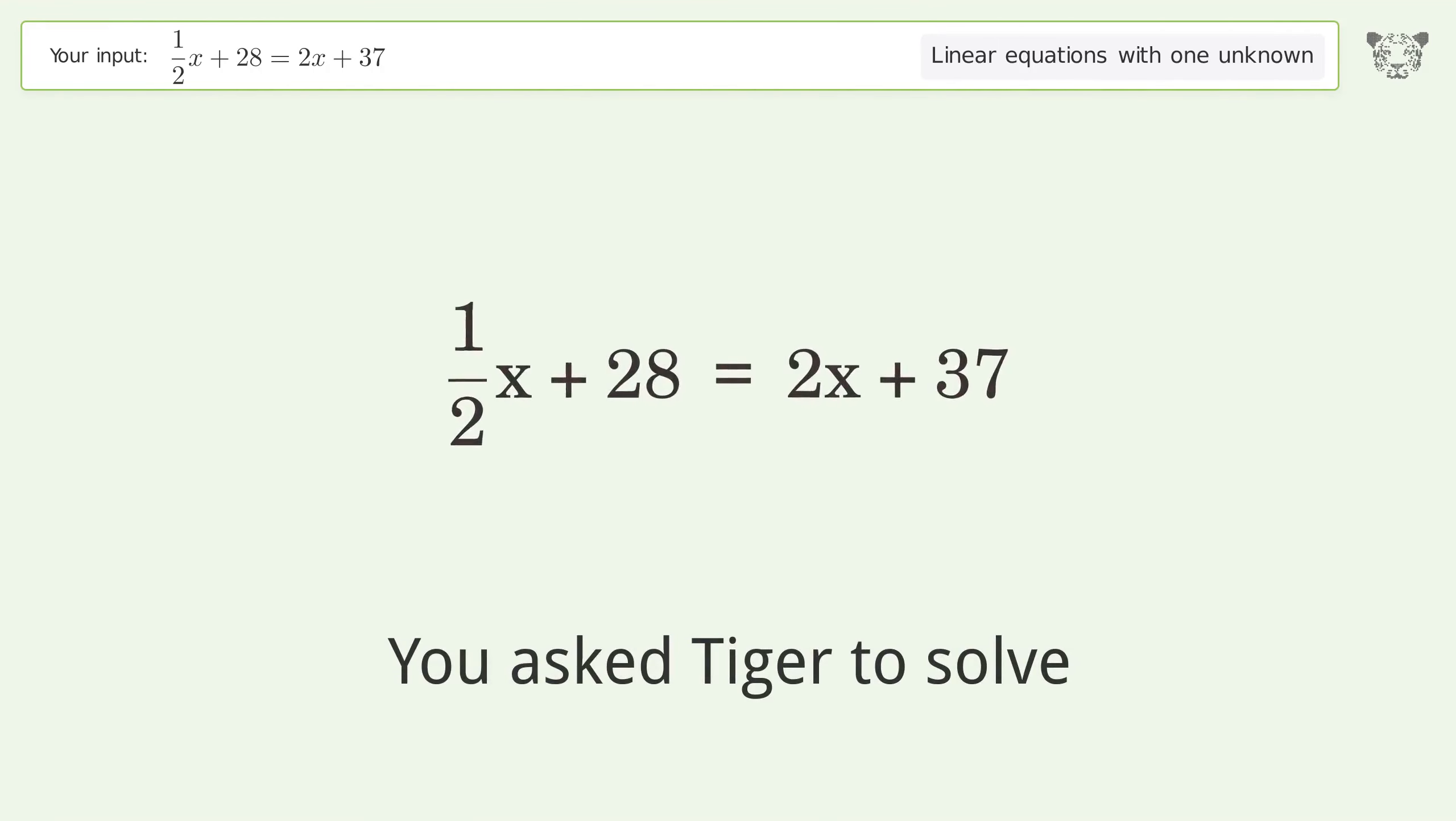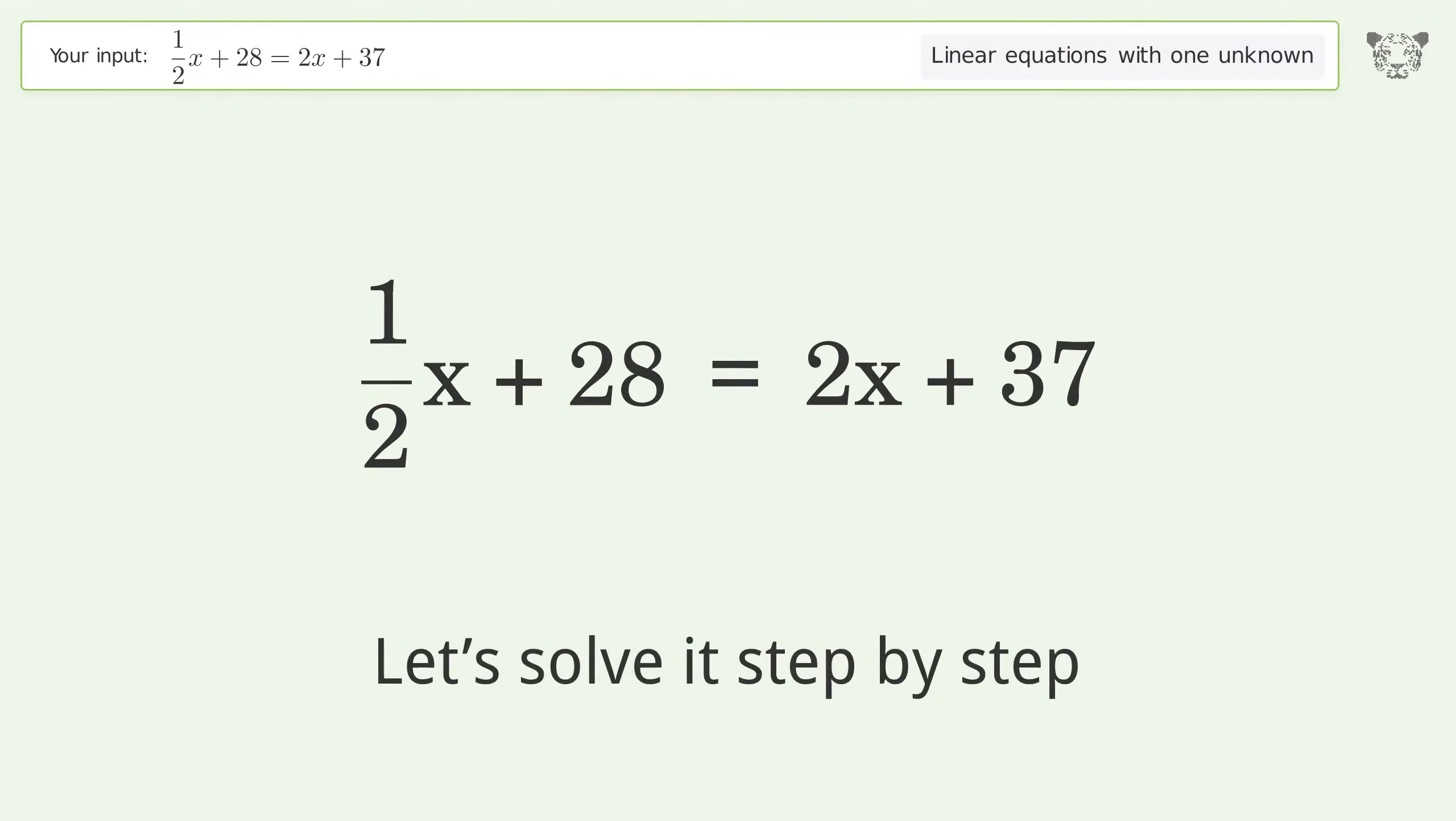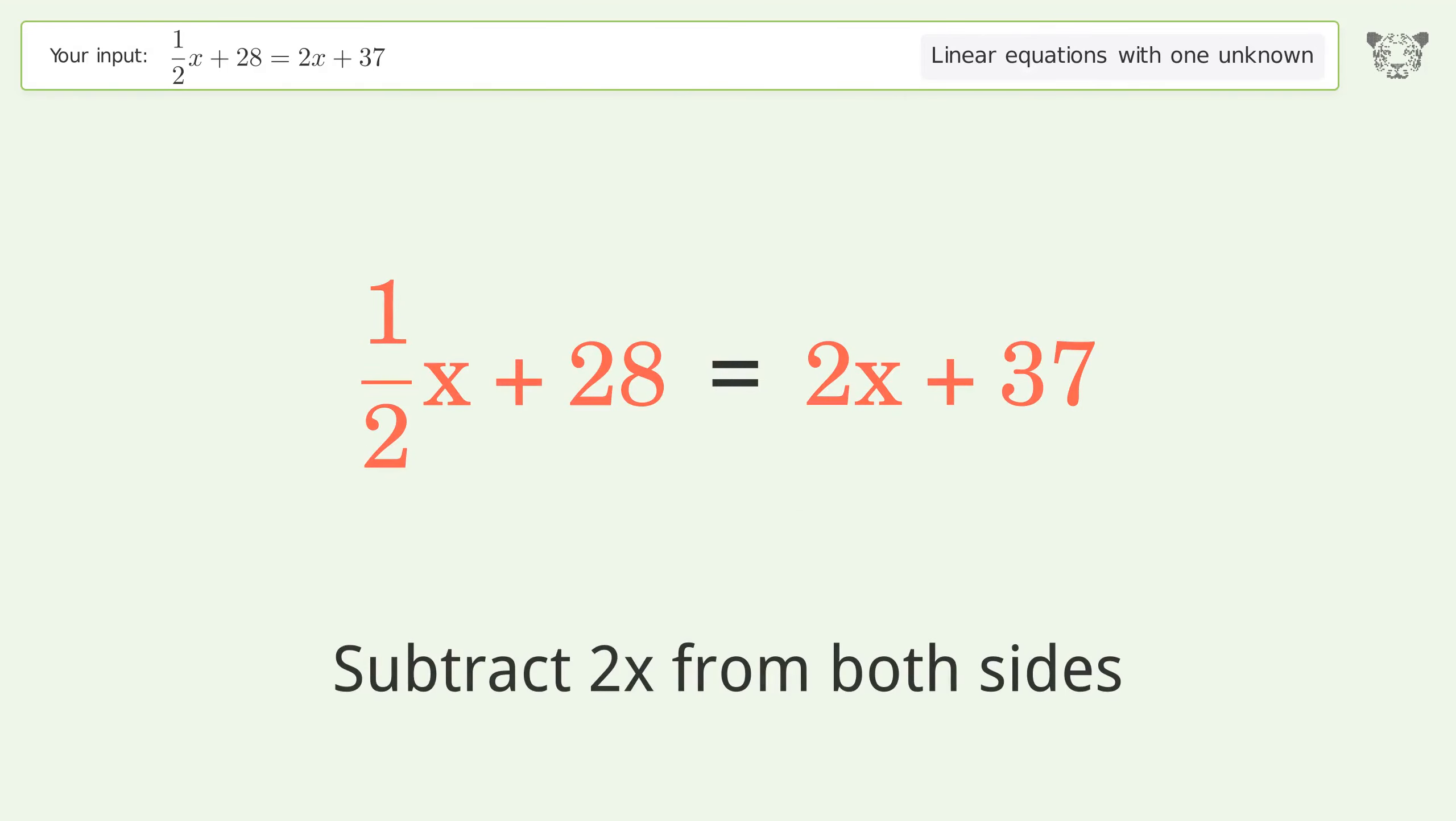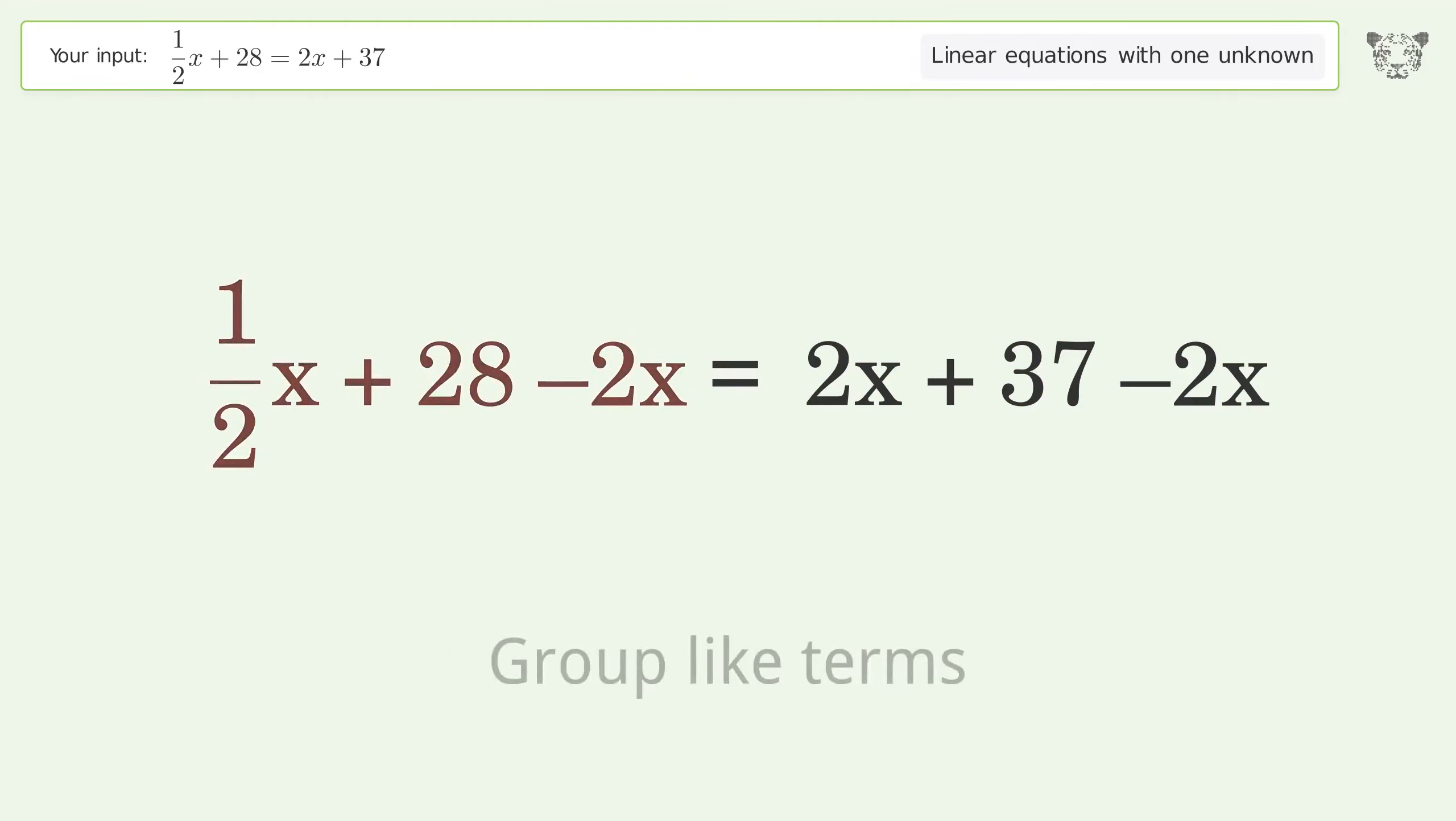You asked Tiger to solve this problem dealing with linear equations with one unknown. The final result is x equals negative 6. Let's solve it step by step. Group all x terms on the left side of the equation. Subtract 2x from both sides. Group like terms.